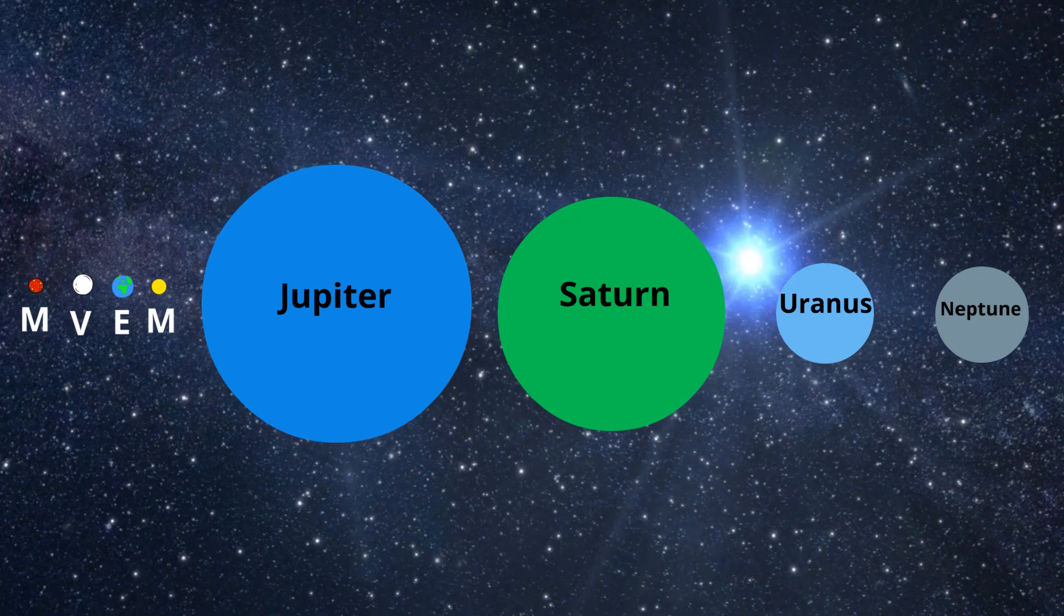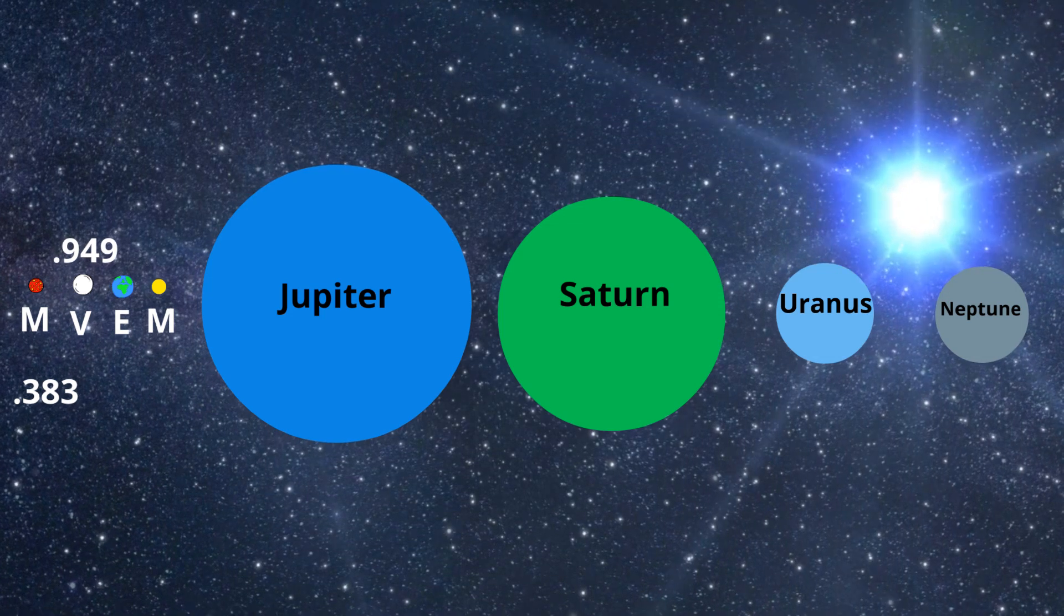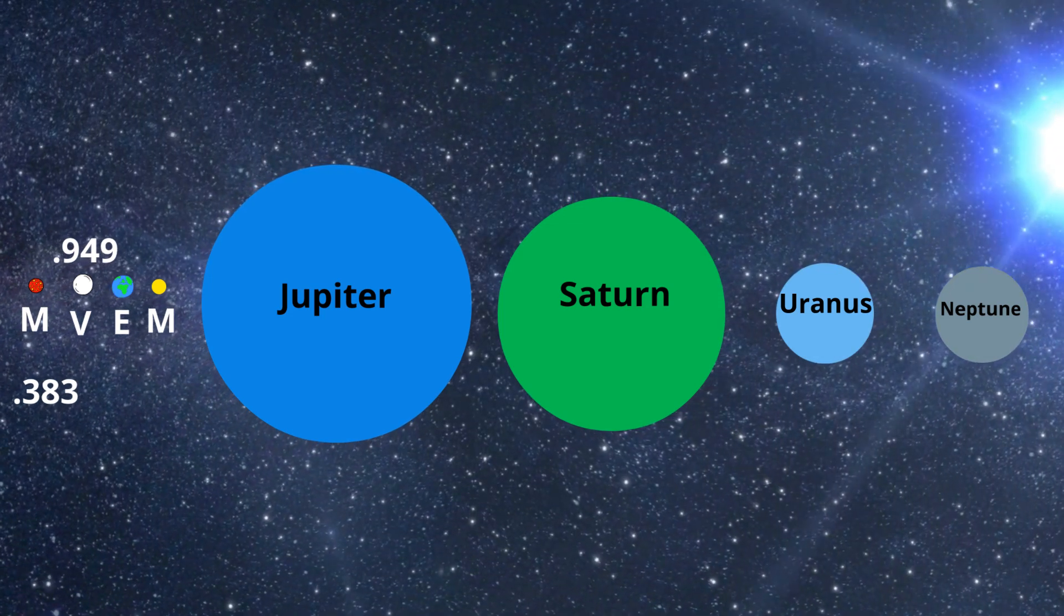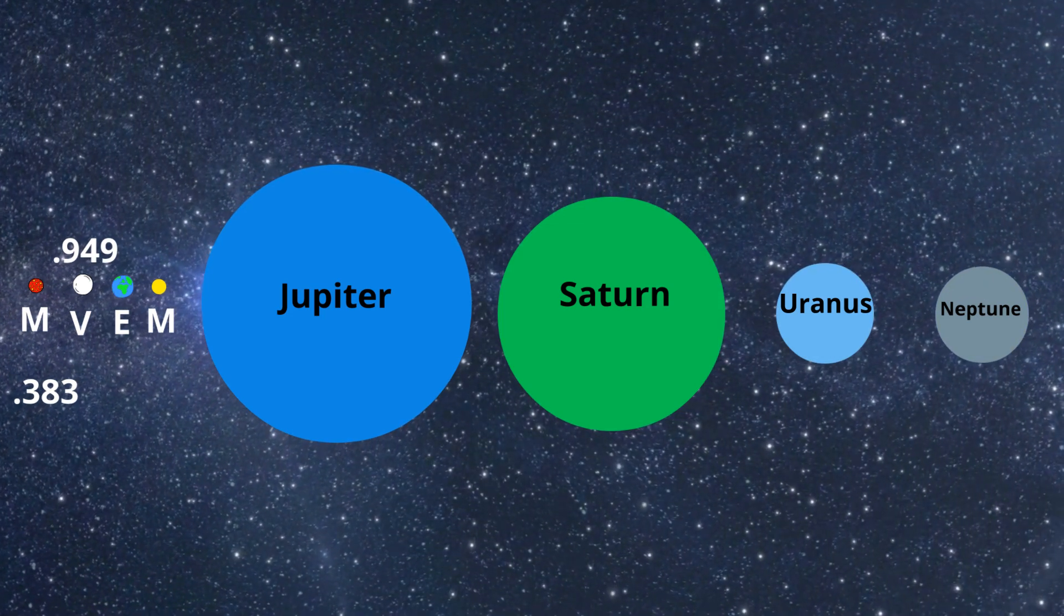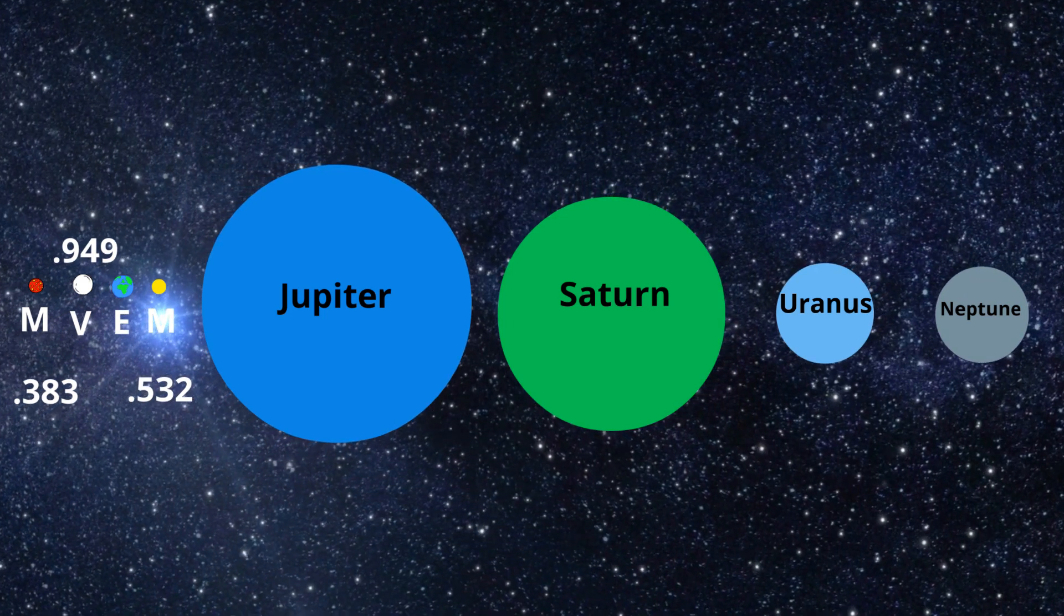Mercury is 0.383 the size of the Earth. Venus is 0.949, so it's almost the same size as the Earth. Mars is roughly half the size of the Earth at 0.532 times the diameter.